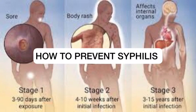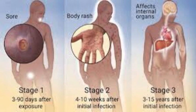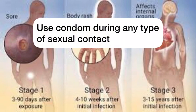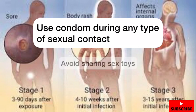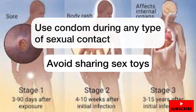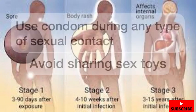How to prevent syphilis? Syphilis can be prevented through the use of condoms during any type of sexual contact. It can also be prevented by avoiding the sharing of sex toys.